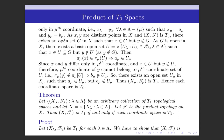The μth coordinate of y is yμ = bμ. Since x and y are distinct points in X and (X,T) is T0, there exists an open set G in X such that x∈G but y∉G. Since G is open and contains x, G is a neighborhood of x, so there must exist some basic open set U = ∏Uλ such that x∈U⊆G.